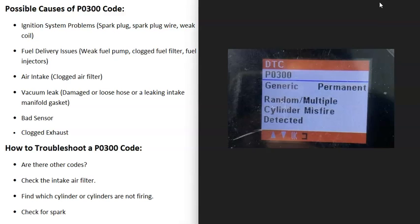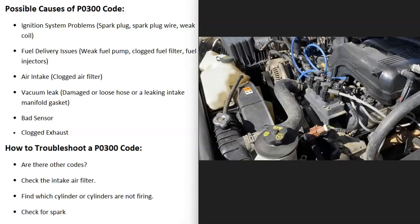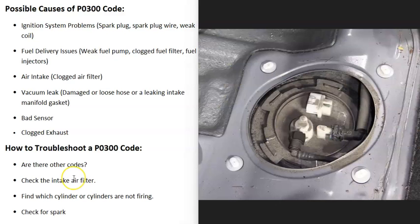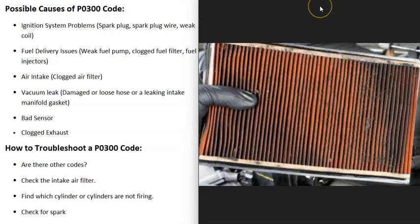Possible causes of a P0300 code include ignition system problems, such as a bad spark plug, bad spark plug wire, or bad coil. Another cause is fuel delivery issues — a weak fuel pump, a clogged fuel filter, or a bad injector.